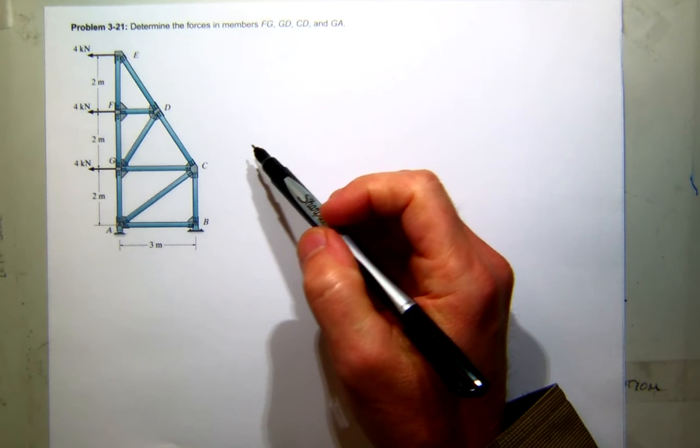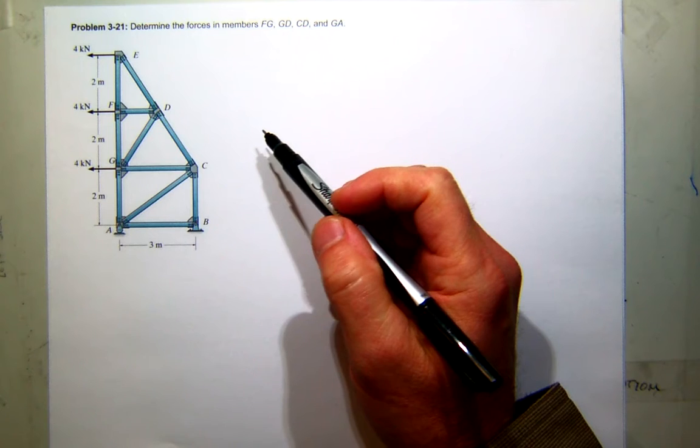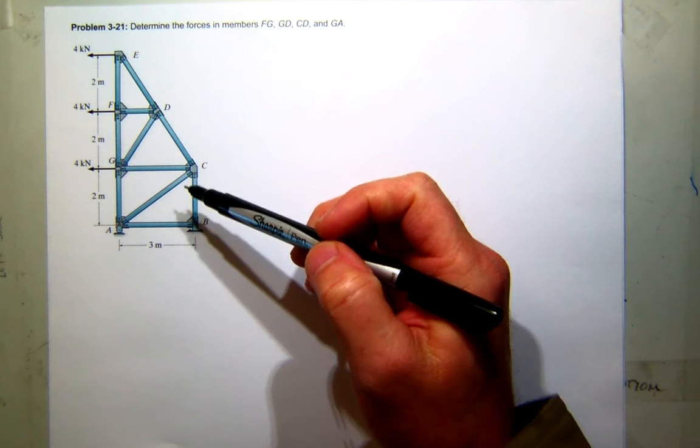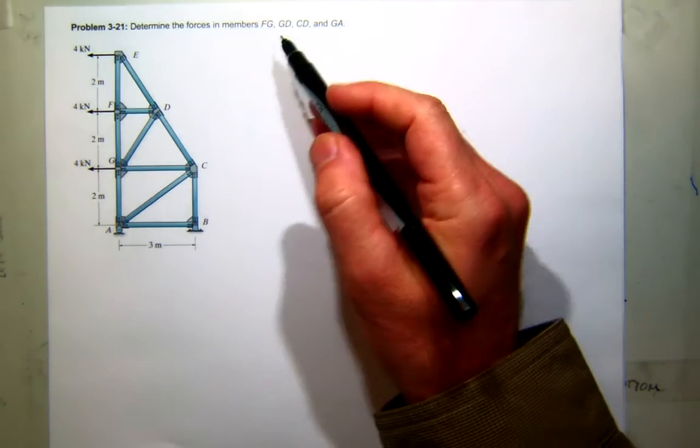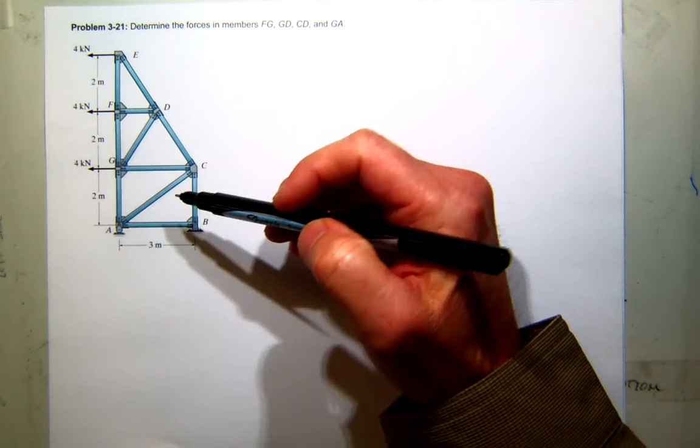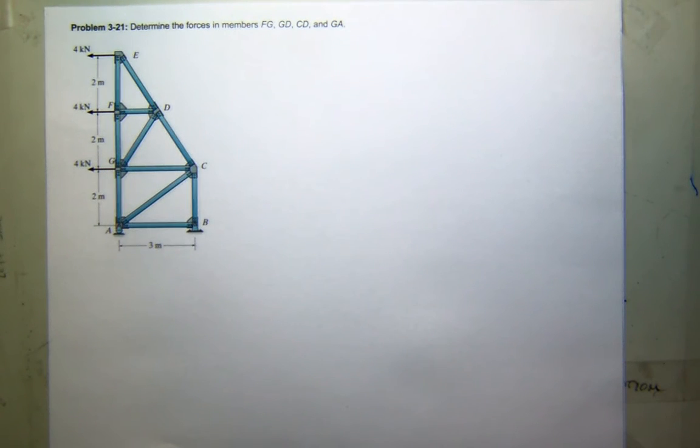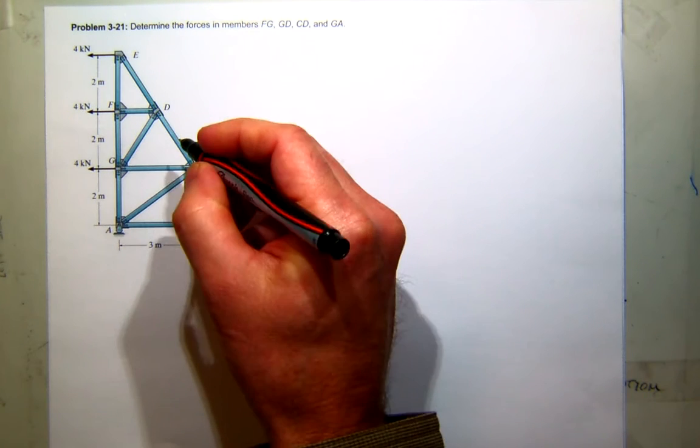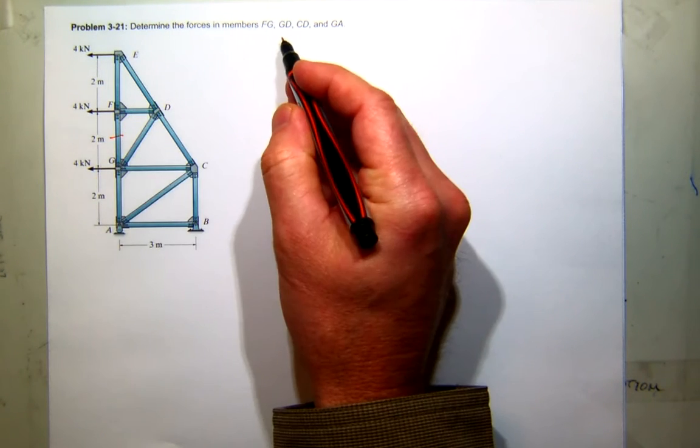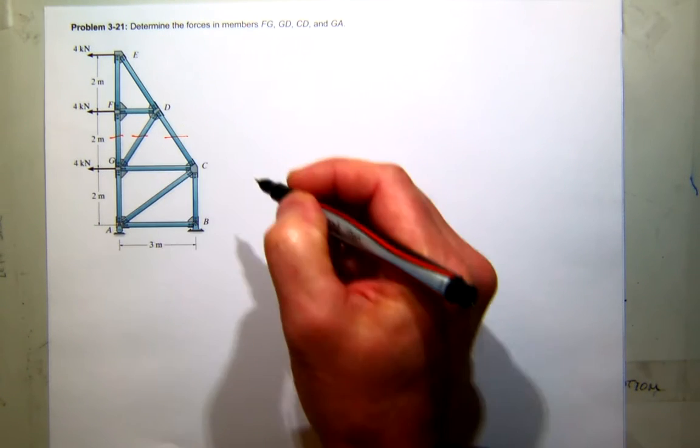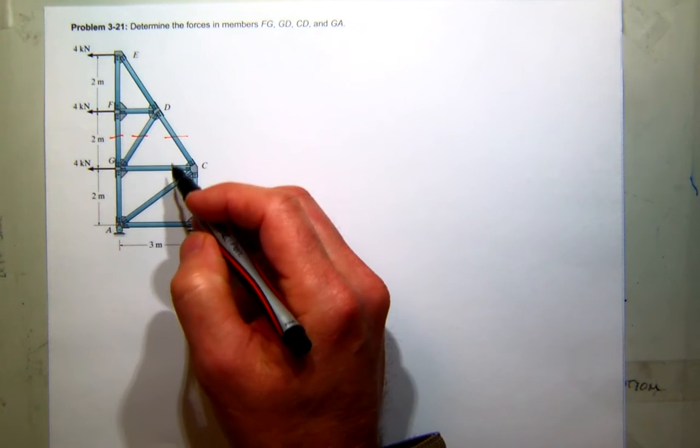Okay, so here's a problem that's kind of emblematic of what we've been talking about in our truss work. You can see that it only is interested in a couple of elements in this truss. So the first thing I'll do is identify those. We've got FG, which is here, GD here, CD there. Oh, that's nice, that's one nice section that we can run.